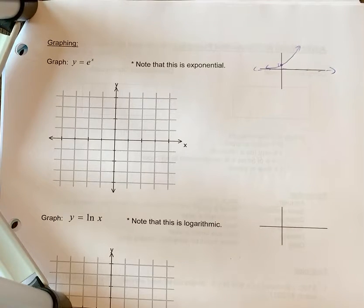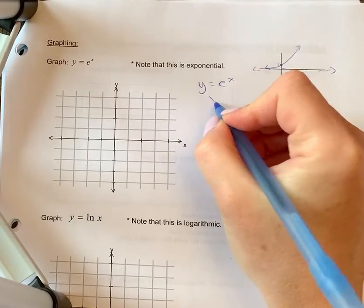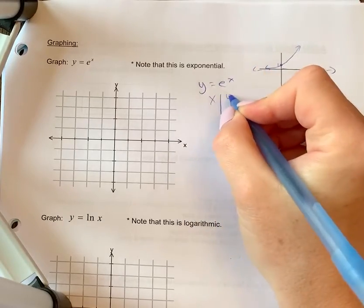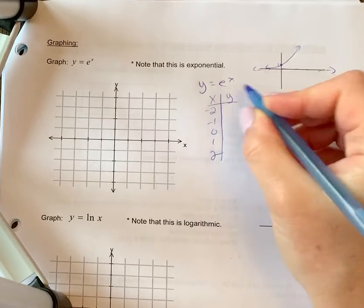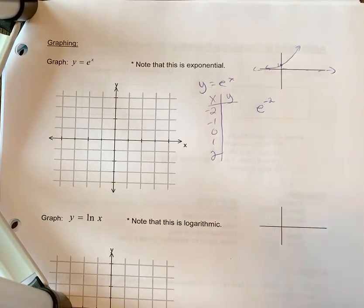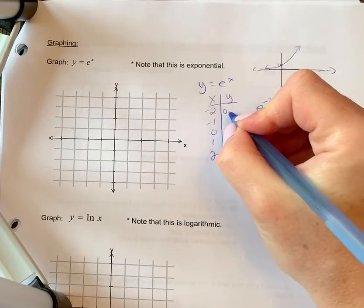So let's do a table of values for y equals e to the x graph. We're choosing x values again because we're substituting that in. So for example, you're going to calculate e to the negative 2. Right now we're going to use our calculators to do that. So you put that in your calculator and you're going to notice you're going to get 0.14.